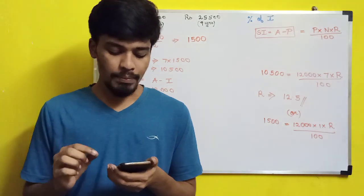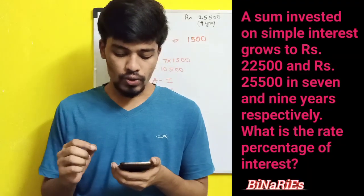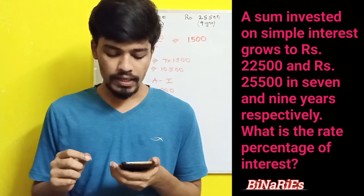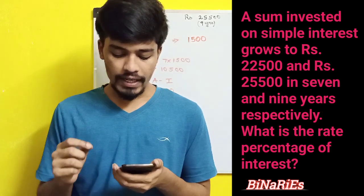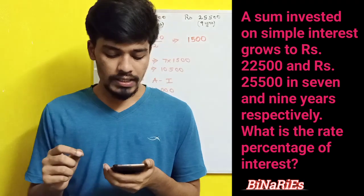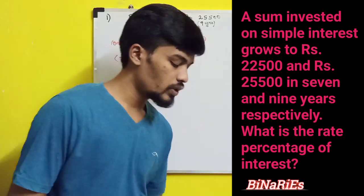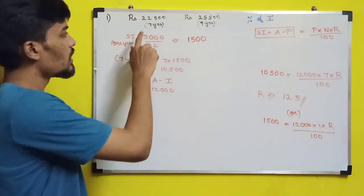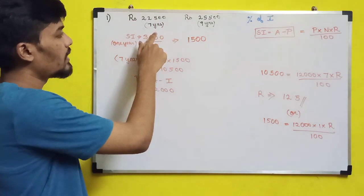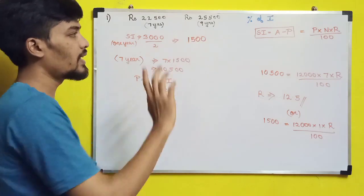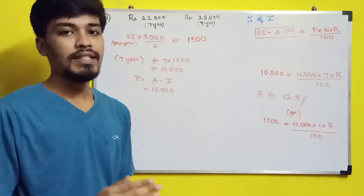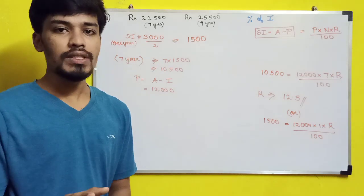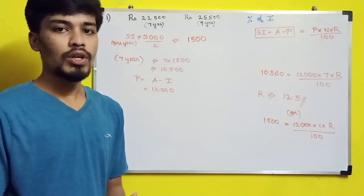The first question: a sum invested on simple interest grows to rupees 22,500 and rupees 25,500 in seven and nine years respectively. What is the rate percentage of the interest? They have given that the simple interest amount is 22,500 in seven years and 25,500 in nine years. In simple interest, the basic concept is that the interest for all the years will be the same.